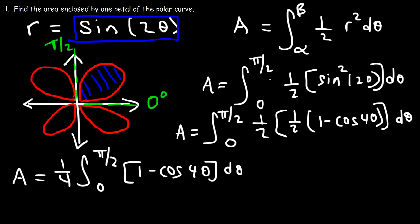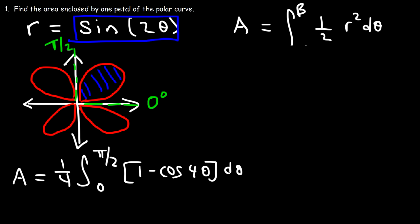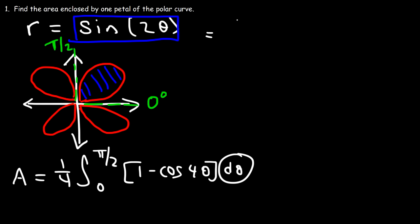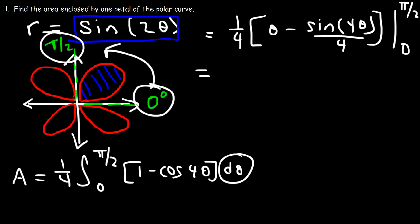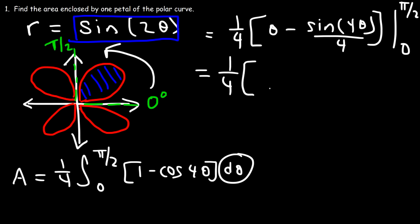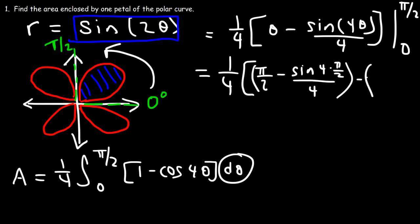So now we're in a position to take the integral of this expression. The antiderivative of 1 d theta is theta. And the antiderivative of cosine 4 theta is sine 4 theta divided by 4. We evaluate this from 0 to pi over 2, so let's replace theta with pi over 2. This gives us sine of (4 times pi over 2) divided by 4. And then if we plug in 0, sine of 0 is 0.